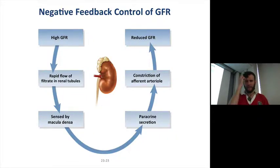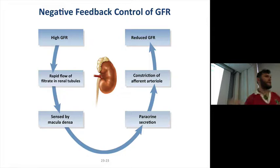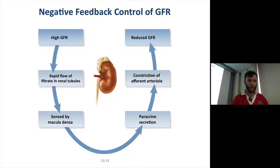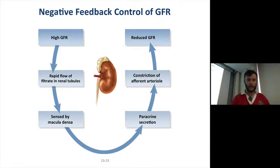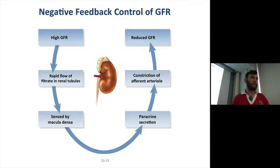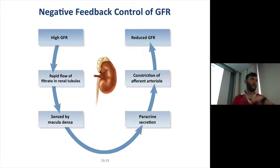For negative feedback: when we have a higher GFR, there's going to be a rapid efflux of filtrate in the renal tubules. The macula densa in the juxtaglomerular complex is going to recognize that and secrete various paracrine factors that will have the opposite effect — it's going to contract the afferent arteriole instead of dilating it, reducing incoming blood pressure and giving us a reduced glomerular filtration rate. So there's both a positive and a negative feedback loop in terms of autoregulation.